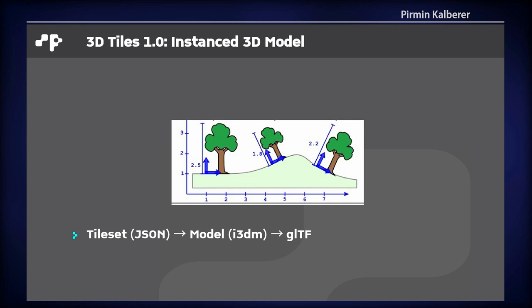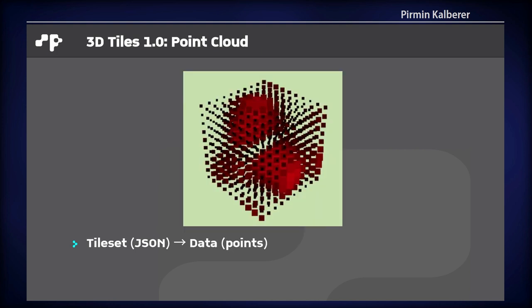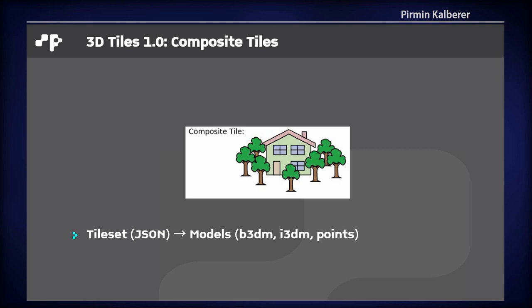It is built the same way — a tileset.json describing the tiles, and then the model itself is in a binary file, i3DM, which contains GLTF for the tree itself plus some additional data. The third format is the point cloud format, which is a binary blob containing points and additional data like color. And then there is composite tiles, which contains multiple models — a JSON description pointing to different model types: point cloud models, instanced, or batched models.